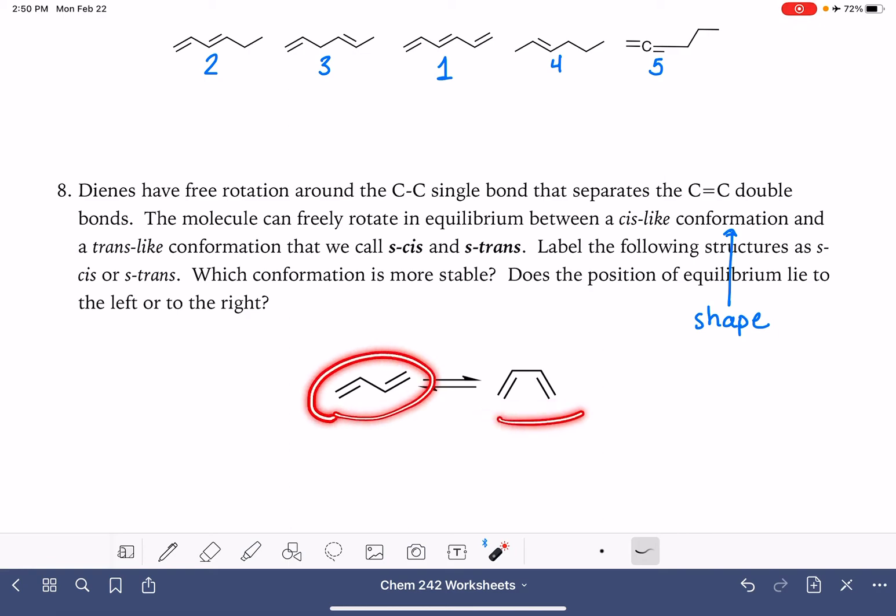The single bond in between two double bonds can freely rotate, and it does freely rotate. So this particular molecule is constantly changing its shape. Sometimes it looks like this. Sometimes it looks like this. It's free to turn at this bond and just switch from one shape to another.